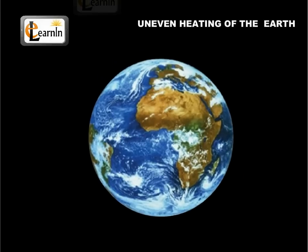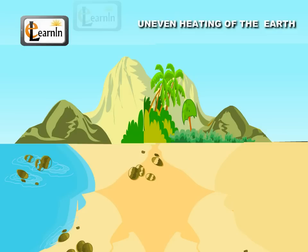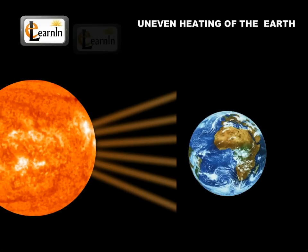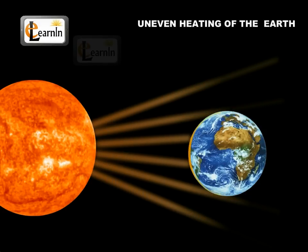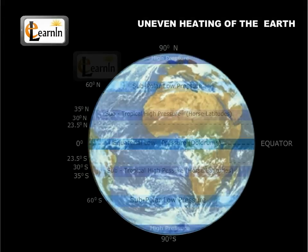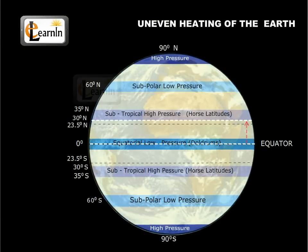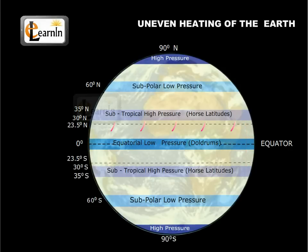Uneven heating of the Earth — due to the uneven heating between the equator and the poles, and uneven heating of land and water — wind currents are primarily generated. Maximum heat from the sun is received by the regions close to the equator. Due to this, the air in the region gets warm. The warm air rises and the cooler air from the regions in the latitude belt from either side of the equator moves in. These winds flow from north to south of the equator.